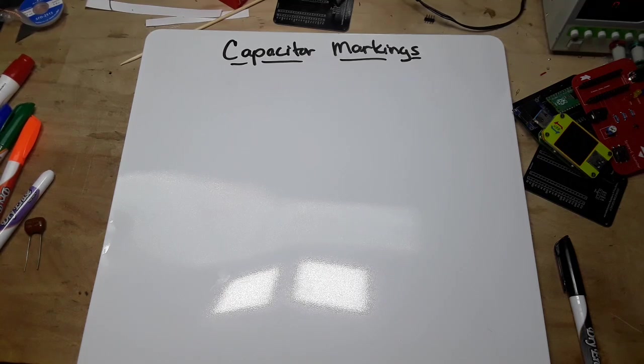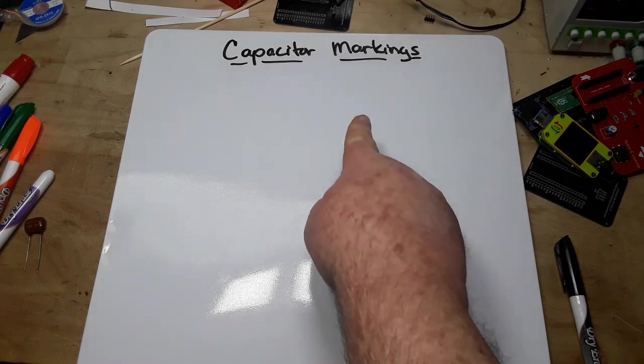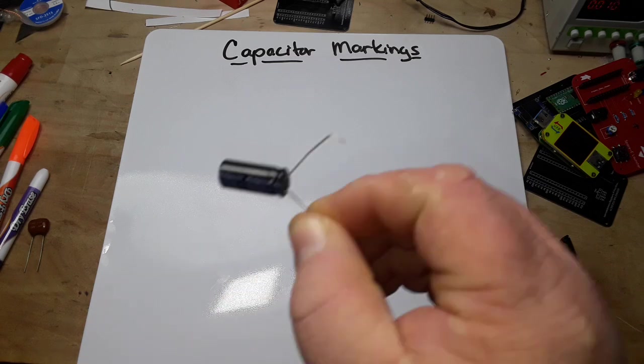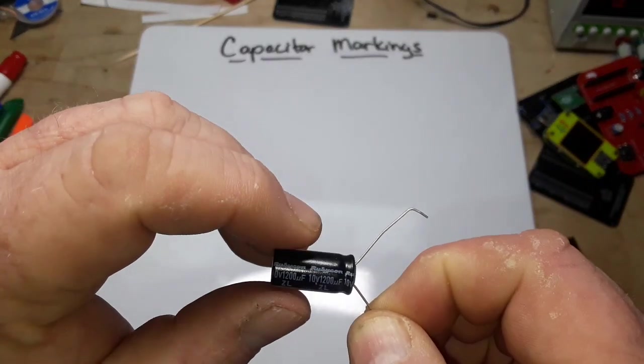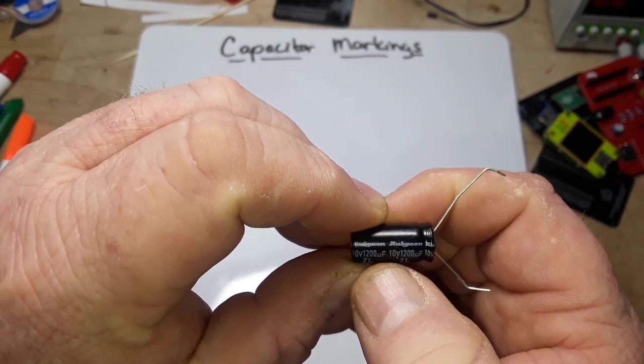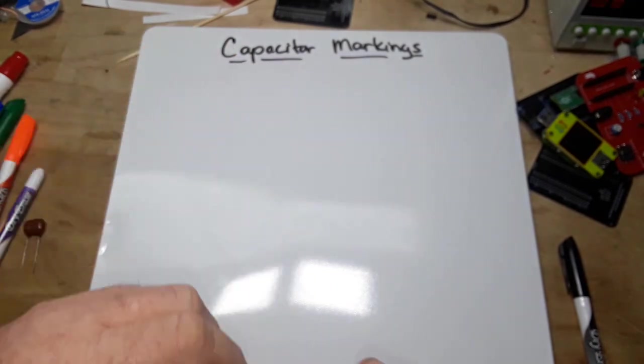Hey, what's happening guys. Today we're going to talk about capacitor markings. Now I'm not talking about your basic electrolytic capacitor - you know how to read that, right? It says right on there: 10 volts, 1200 microfarad, no big deal.